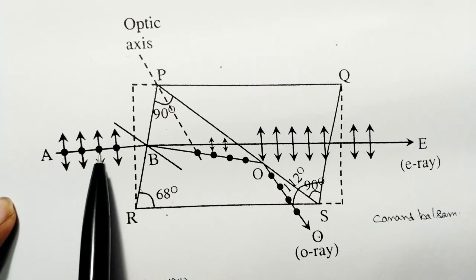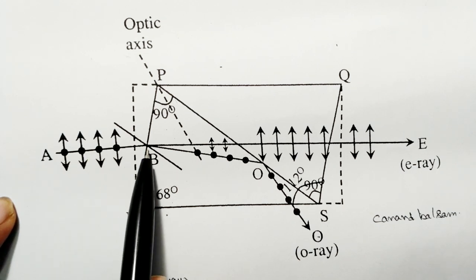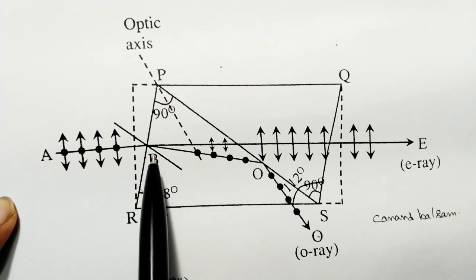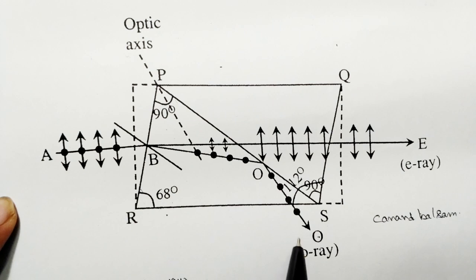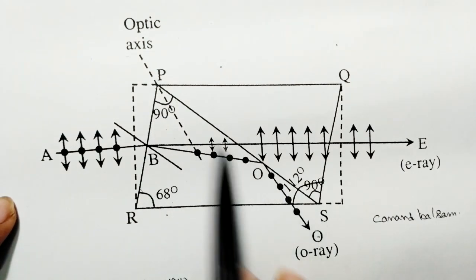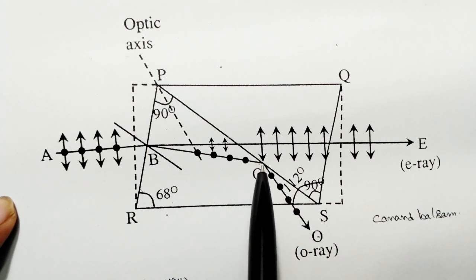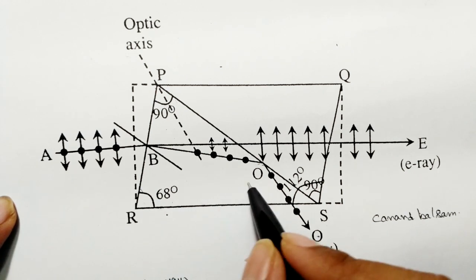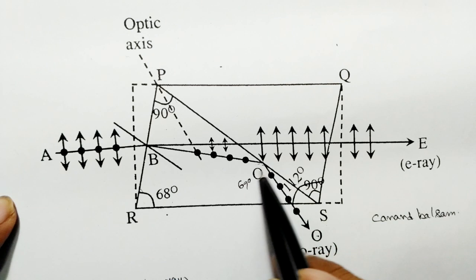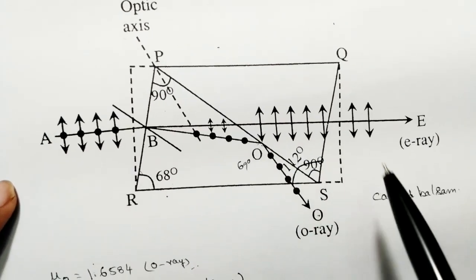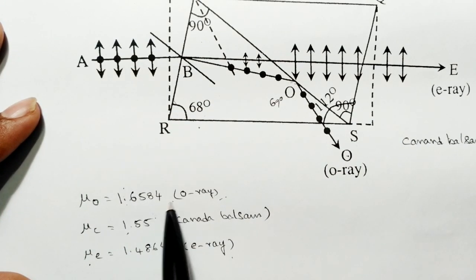When unpolarized light enters the crystal, it divides into two rays: the extraordinary ray and the ordinary ray. We need to divert the ordinary ray into another path. When Canada balsam is pasted at the interface, the ordinary ray is incident on it at around 69 degrees.